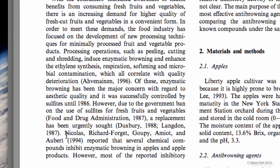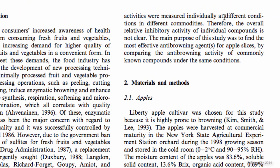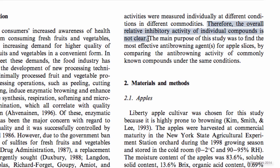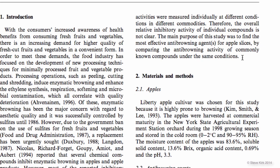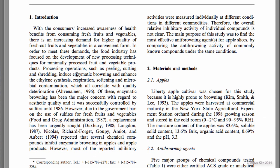Next, it reviews previous research that shows what kind of chemicals prevent browning. Now we get to the problem that this paper is going to address — that most of the reported activities are measured individually at different conditions. And right here, this is the main problem: the overall relative inhibitory activity of individual compounds is not clear. Then we have the main purpose of the study — to find the most effective anti-browning agents for apple slices by comparing the anti-browning activity of commonly known compounds under the same conditions. So we started by getting the reader's attention, then reviewing the history of the problem and what is known, then what we don't know, and finally the statement of purpose.